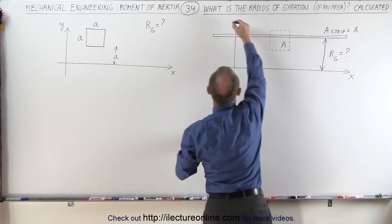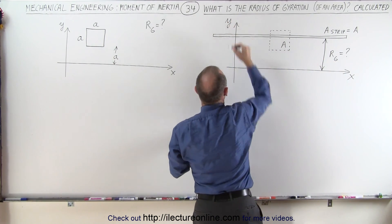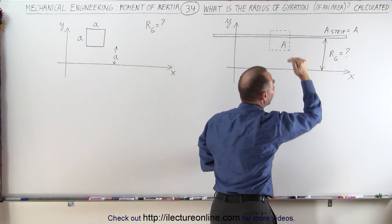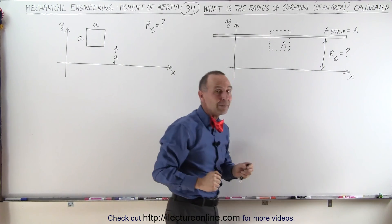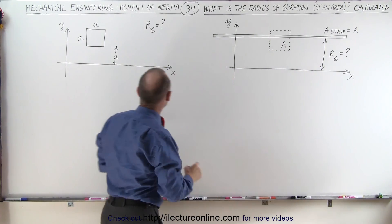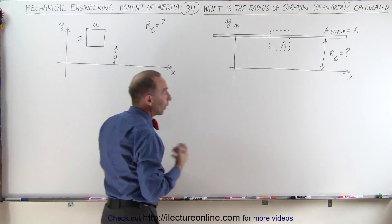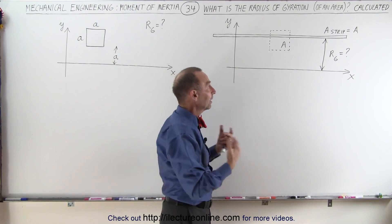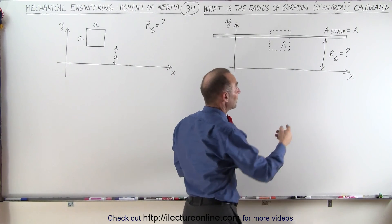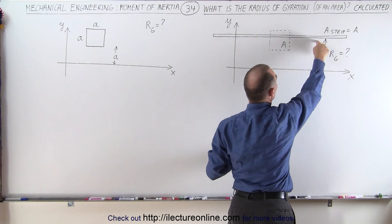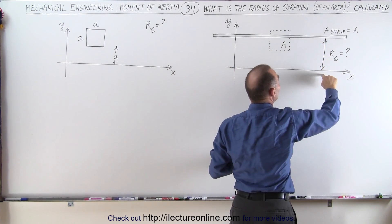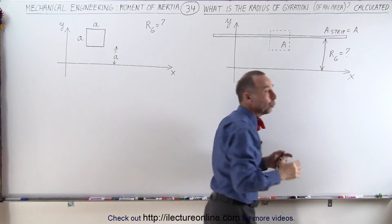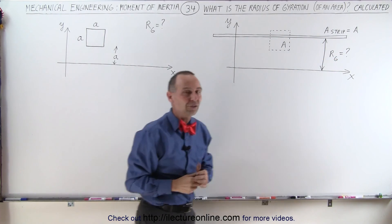This is the x-axis and this is the y-axis. We need to place the strip in such a way that the moment of inertia of the strip is exactly the same as the moment of inertia of the square relative to the x-axis. The distance from the x-axis to the strip will then equal the radius of gyration.